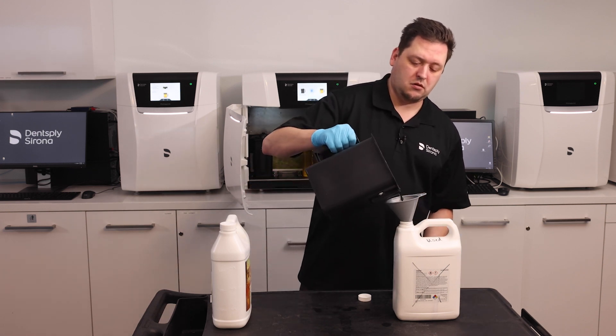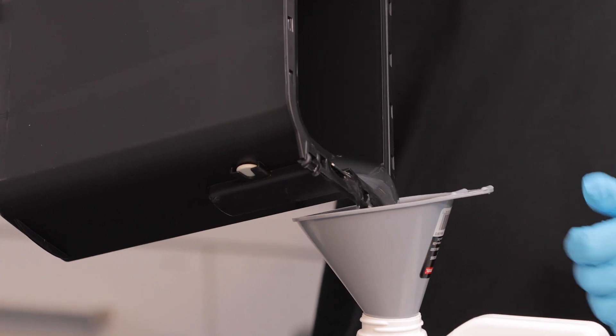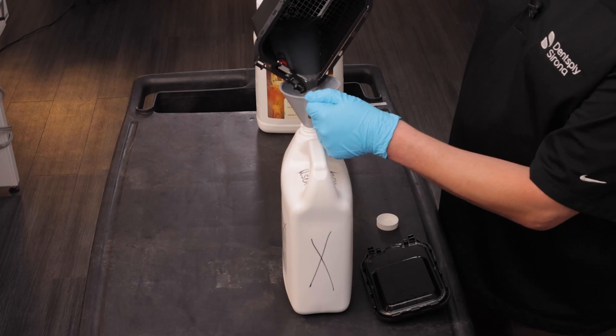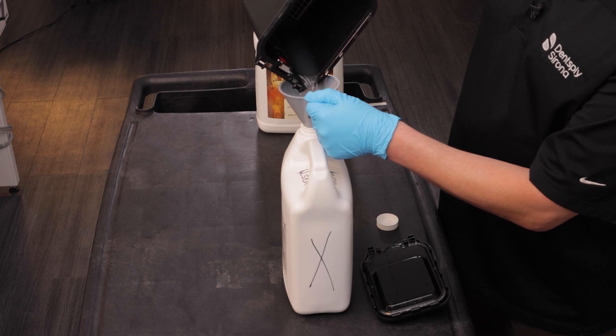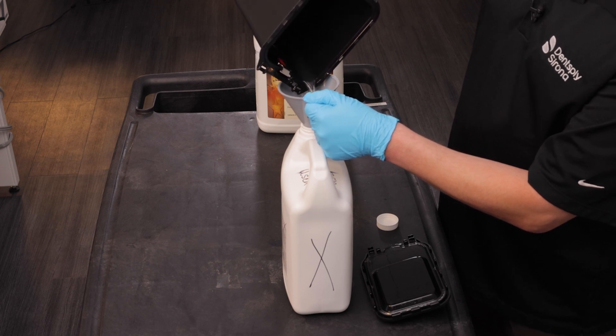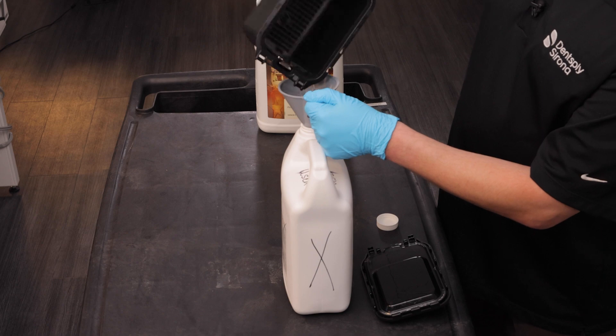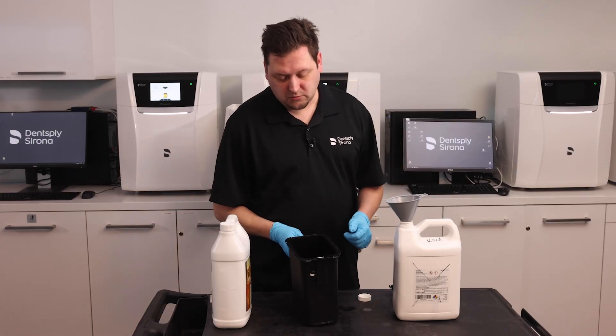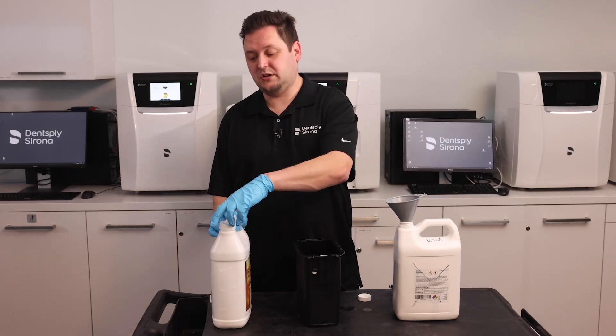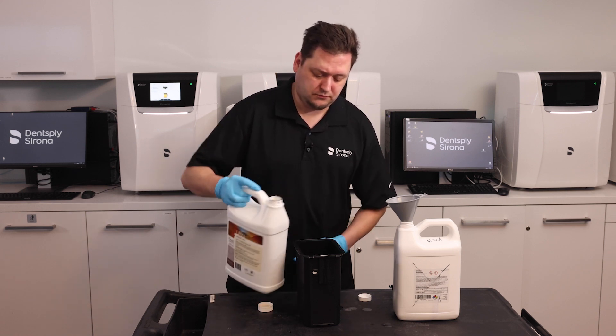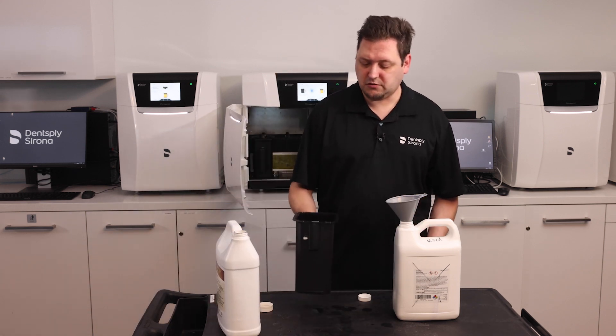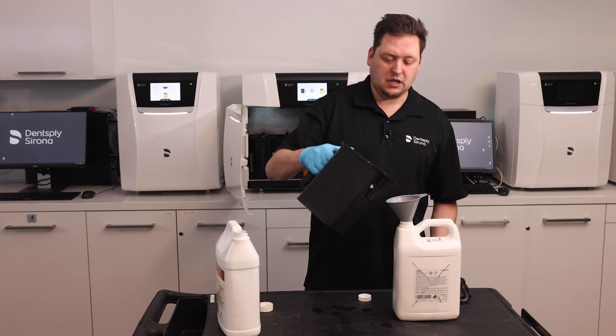Again, pour the rest of the alcohol away. Now if I still see any deposits or want to give it an extra rinse, I can put in some fresh alcohol, just a small amount. Again, swish it around a little bit and pour the rest.